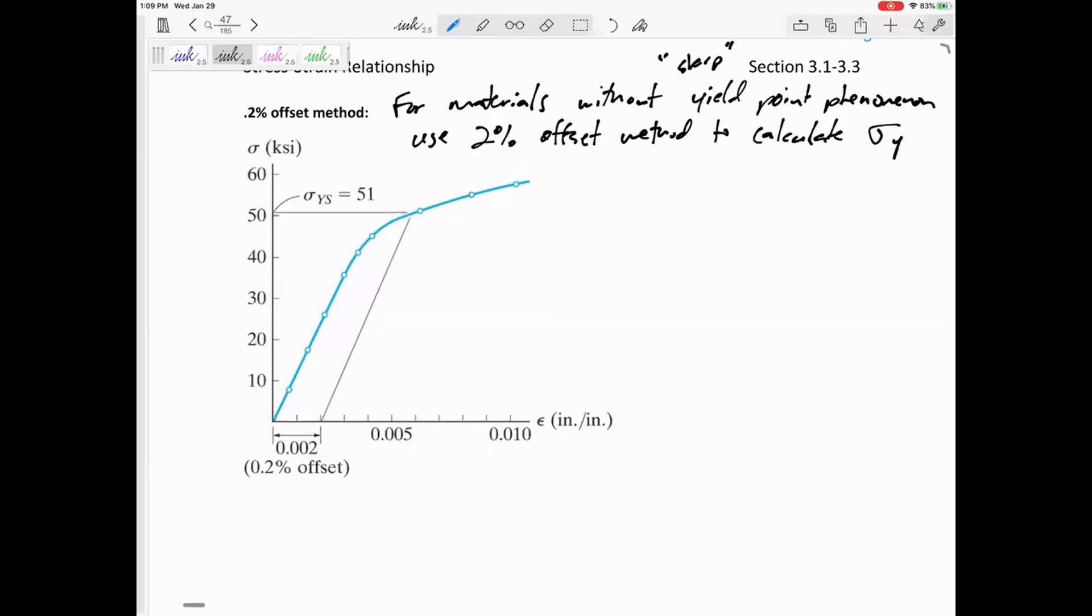it still has a permanent deformation of 0.2%. So this is the point at which if it was unloaded, it would have a permanent deformation of 0.2%, which is a strain of 0.002.